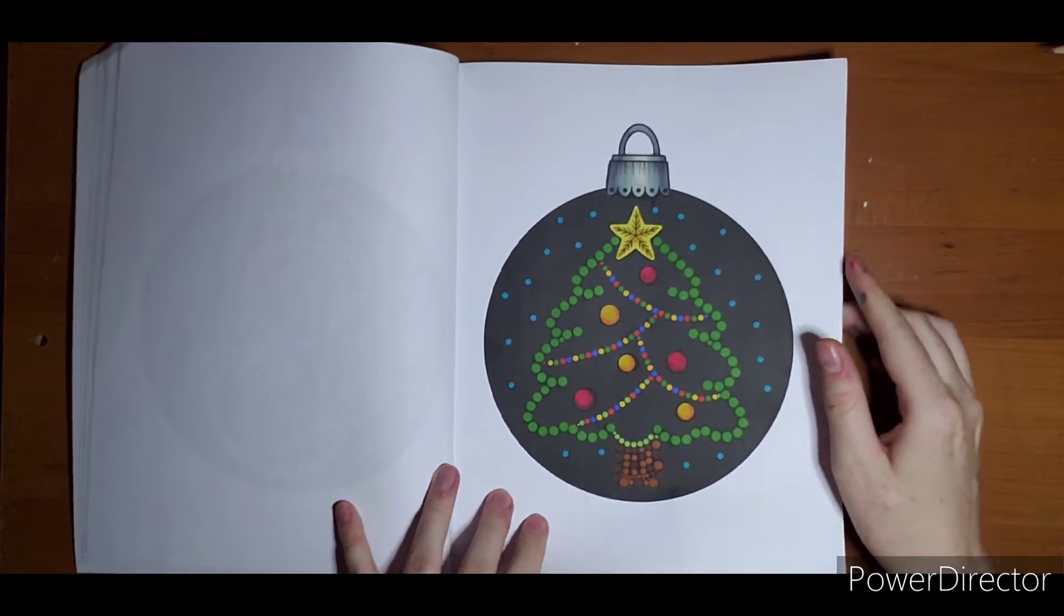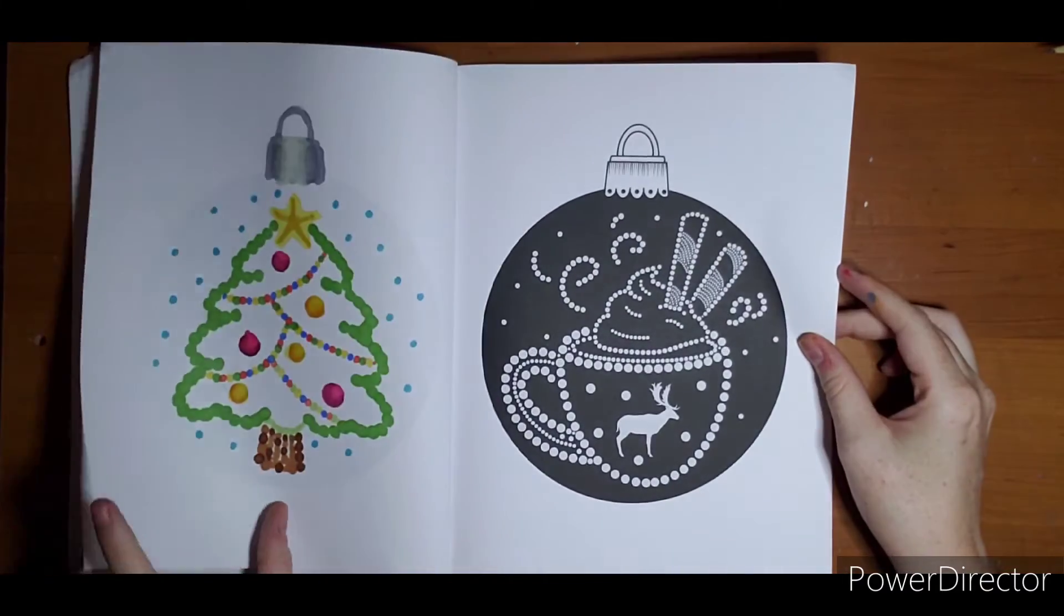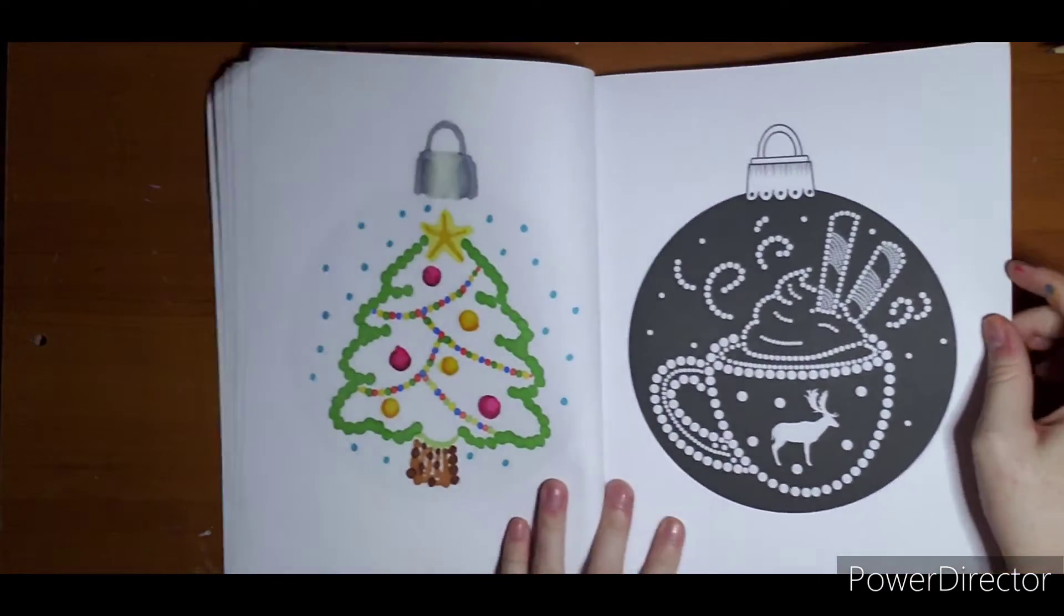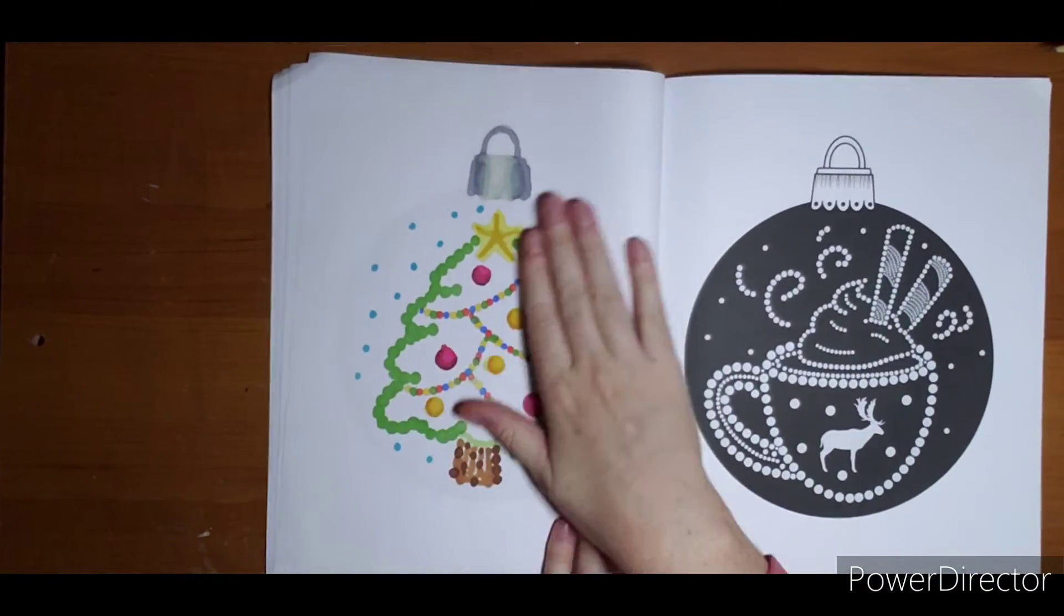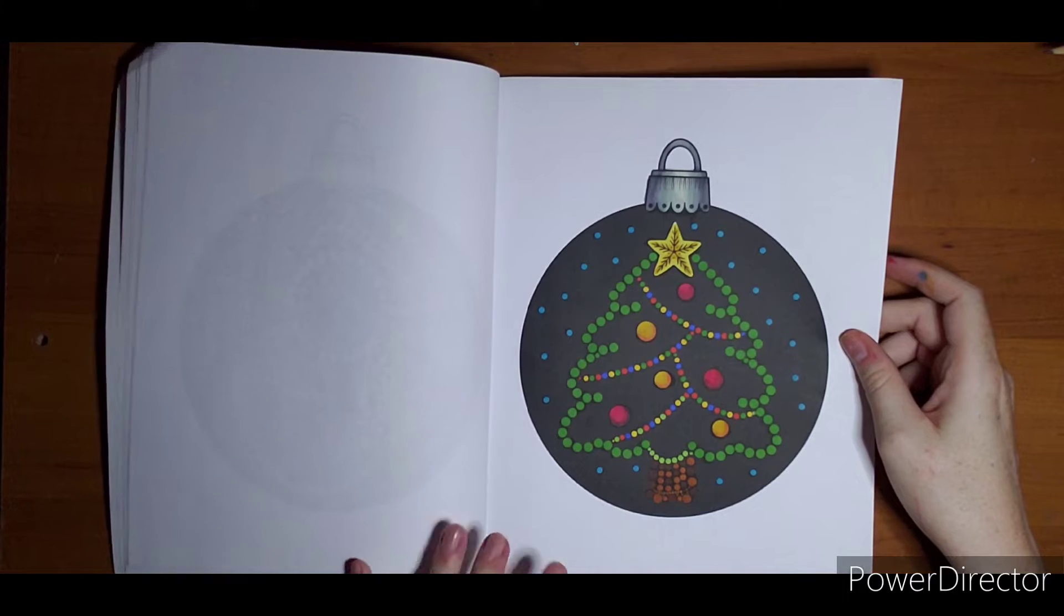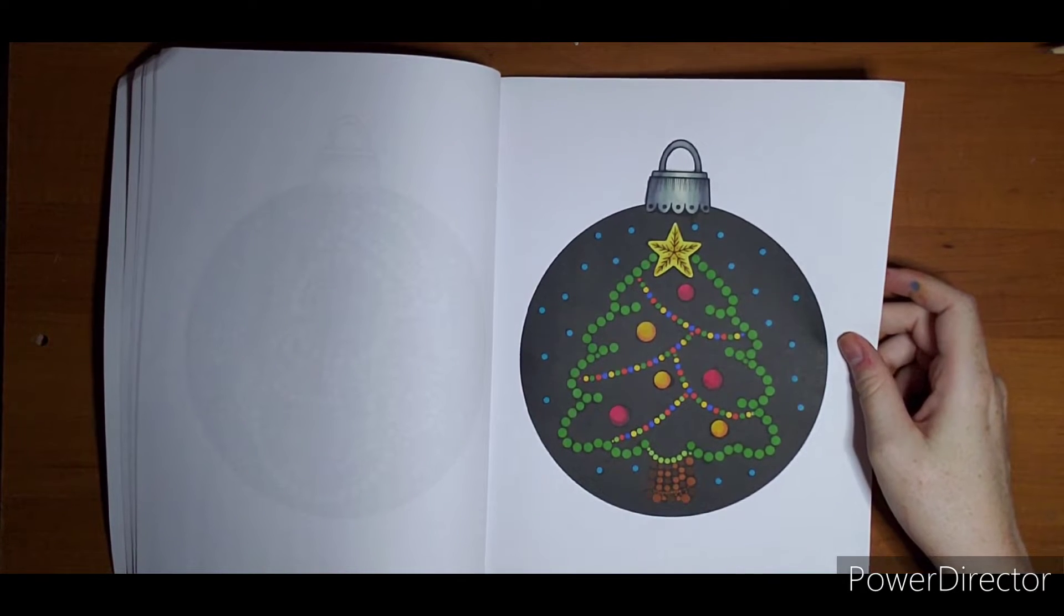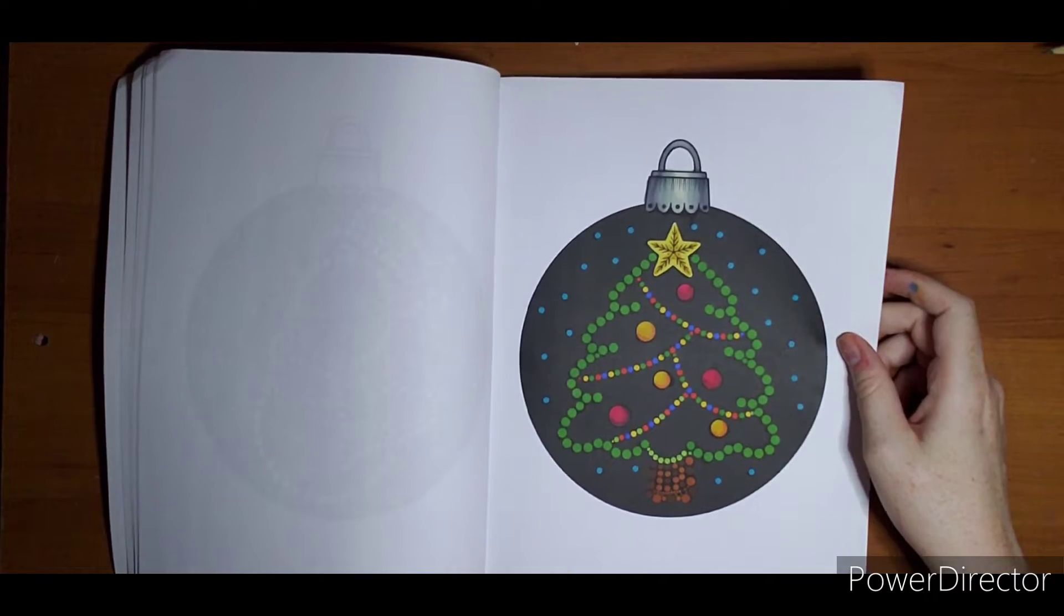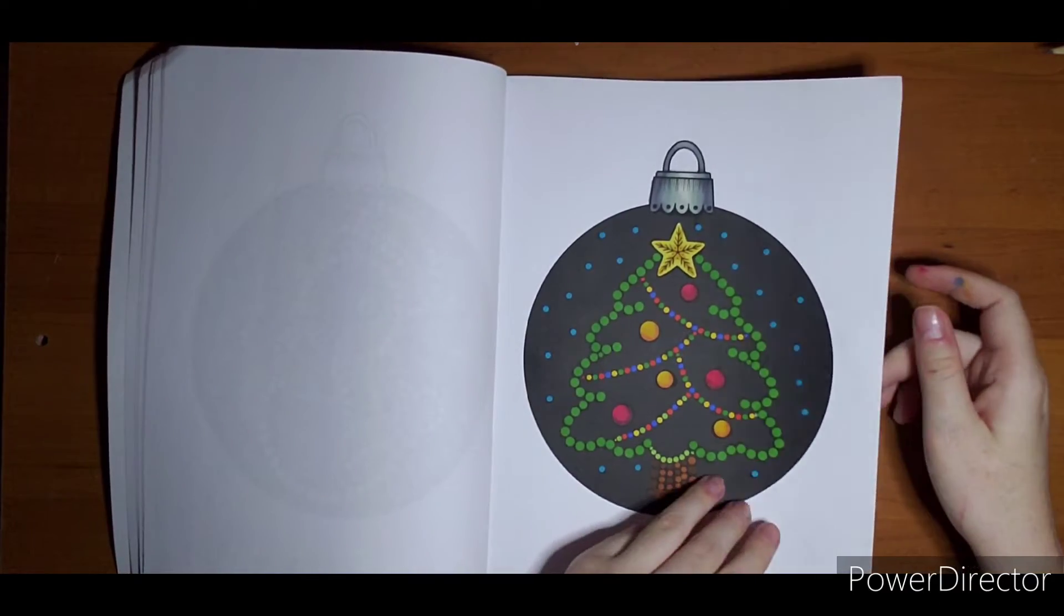As you can see, my dots bleed together on the back, but on the front you can't tell. So if you have eye troubles getting in the little dots or hand trimmers, which I sometimes have, this book works out great because on the front you can't see it.